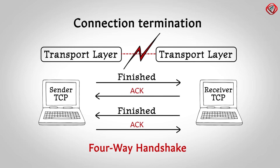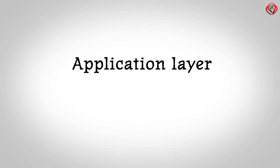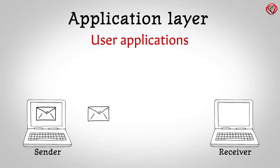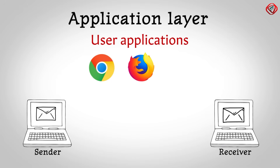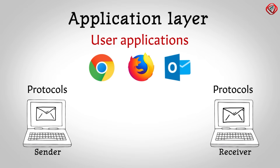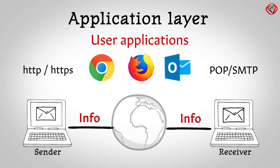Now, the topmost layer in the TCP/IP protocol suite is the application layer. The application layer is used by user applications that pass messages from one computer to another in a network, for example Google Chrome, Firefox, Microsoft Outlook and so on. They use application layer protocols to perform their activities. For example, web browsers use HTTP or HTTPS to do web surfing. Email programs such as Microsoft Outlook use Post Office Protocol or Simple Mail Transfer Protocol for transferring emails. So the application layer provides means to access information on the internet.